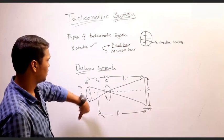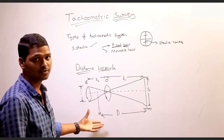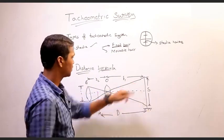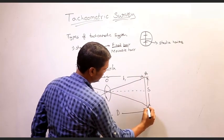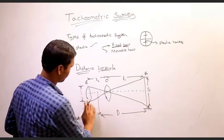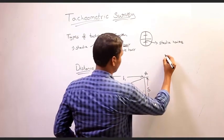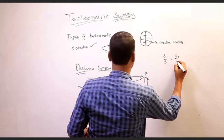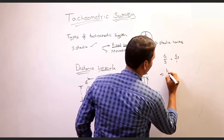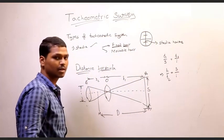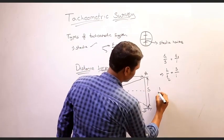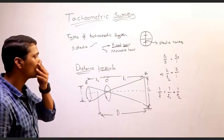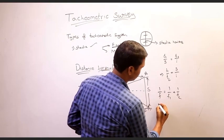From the basic instrumentation and collection of readings, using the similarity of triangles, we can write: F1 by S equals F2 by I, which gives F1 by F2 equals S by I. From the principle of the lens, 1 by F equals 1 by F1 plus 1 by F2.